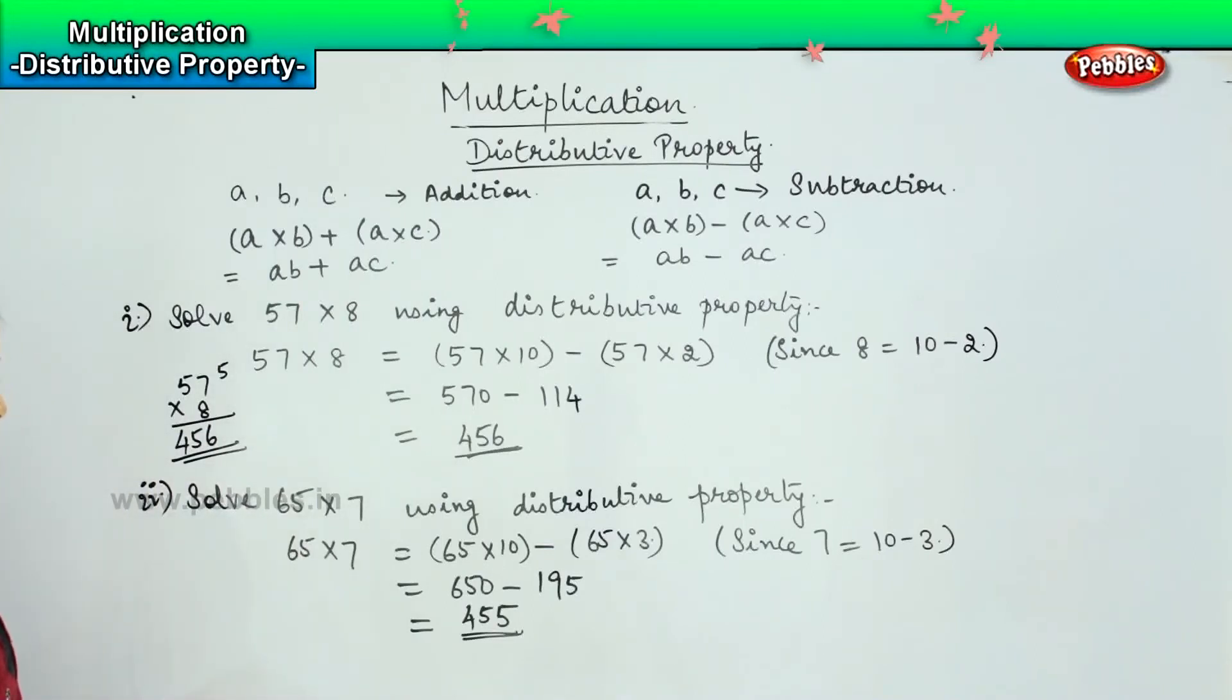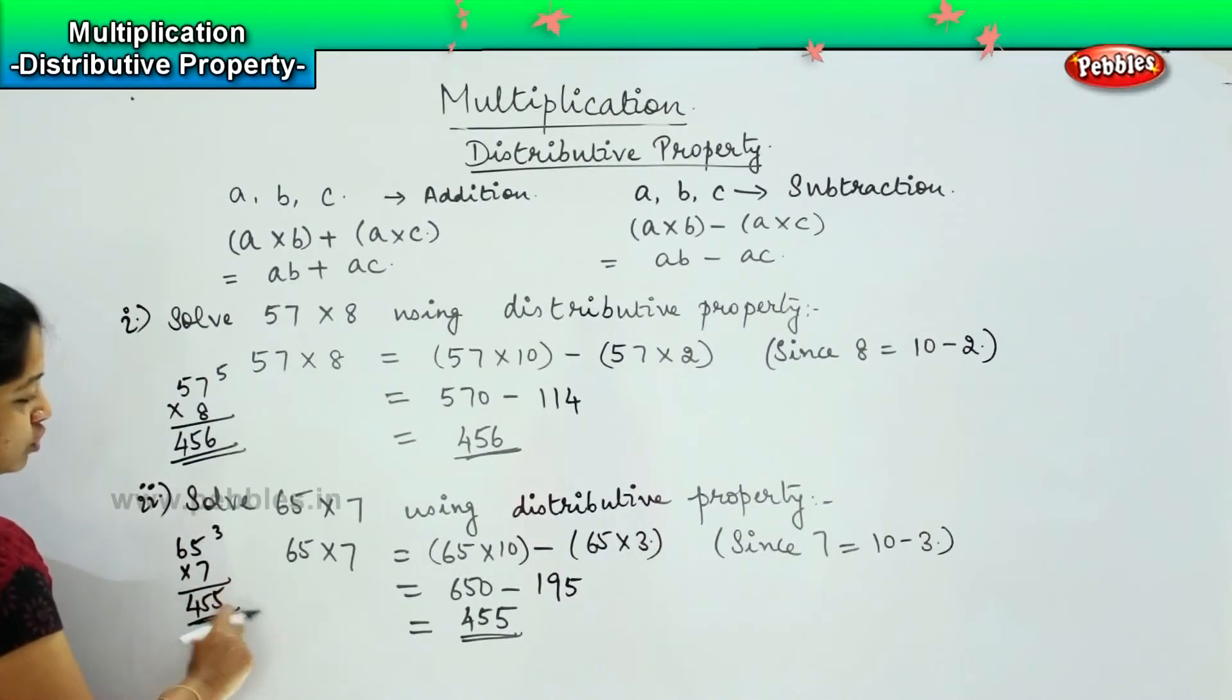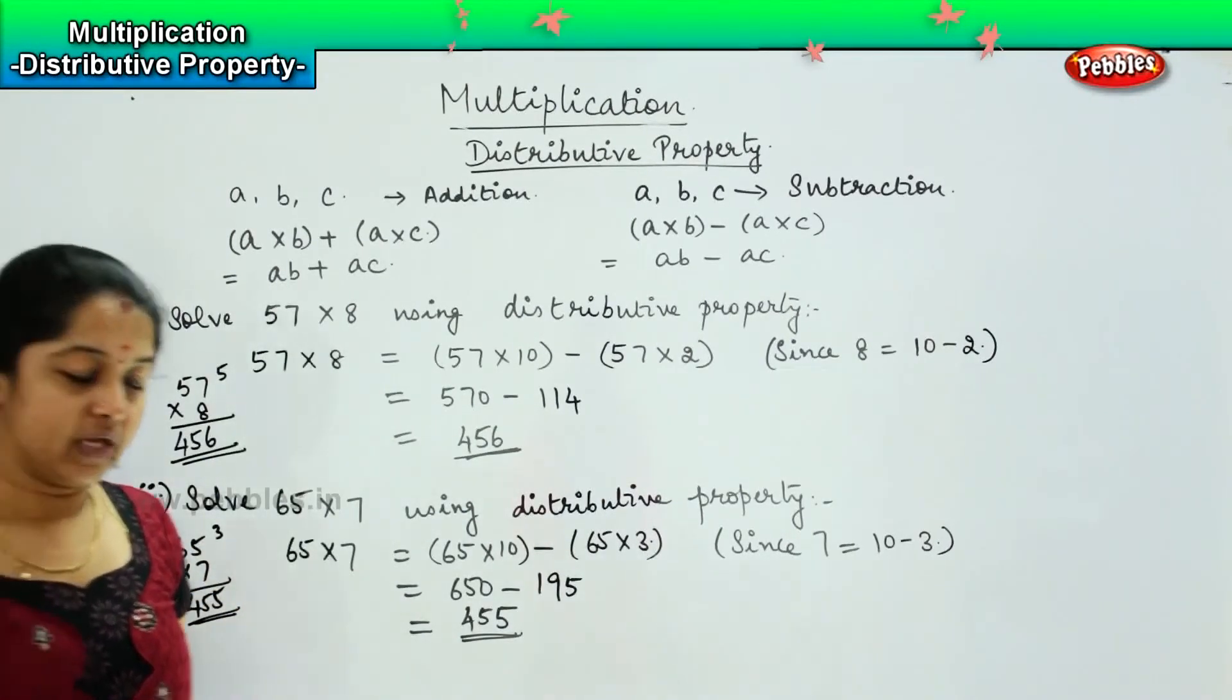Let us try to cross verify whether the answer is right or not. So, 65 into 7. So, 5 times 7 is 35, carry 3. 6 times 7 is 42, 42 plus 3 is 45. So, both ways my answer is correct.